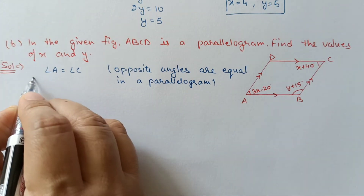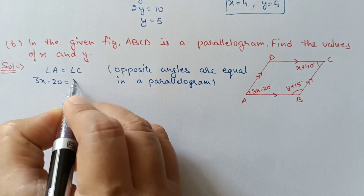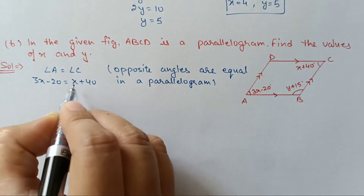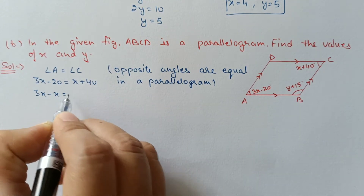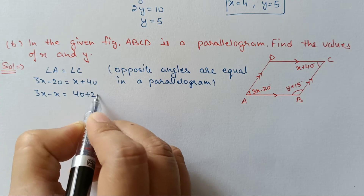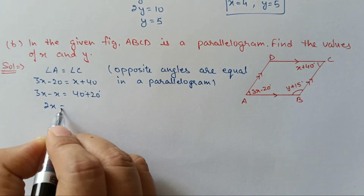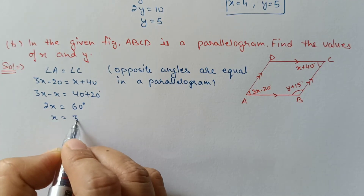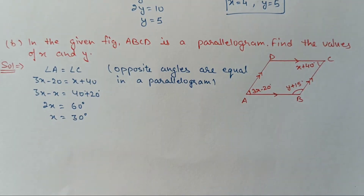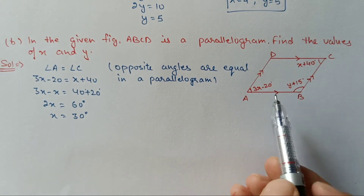Angle A is 3X minus 20 and angle C is X plus 40. Setting them equal: 3X minus X equals 40 plus 20, so 2X equals 60 degrees, giving X equals 30 degrees. We now have the value of X.